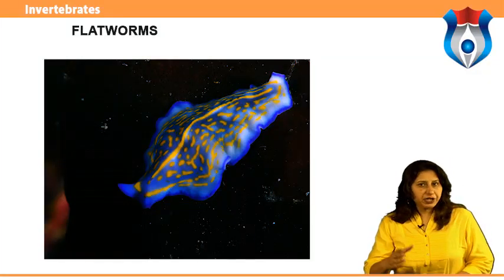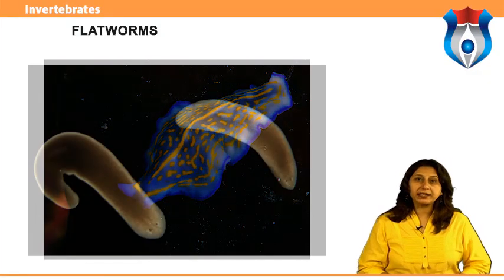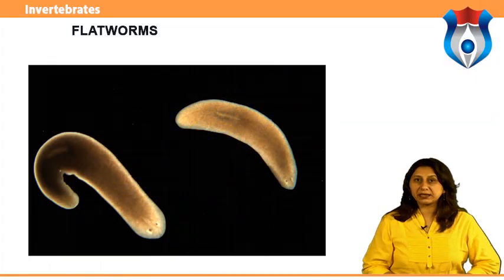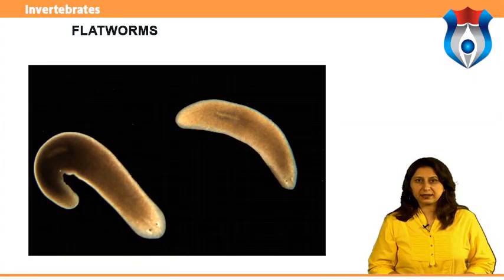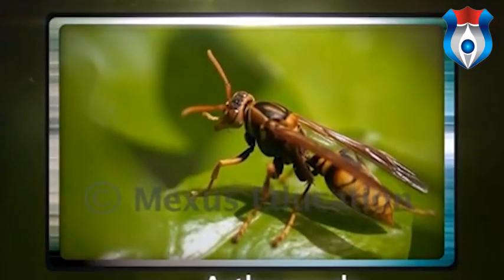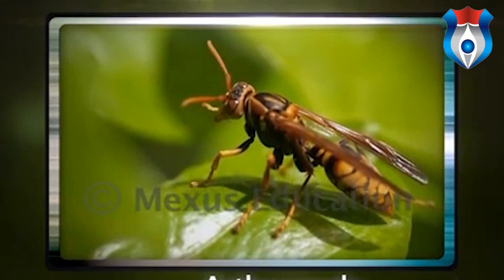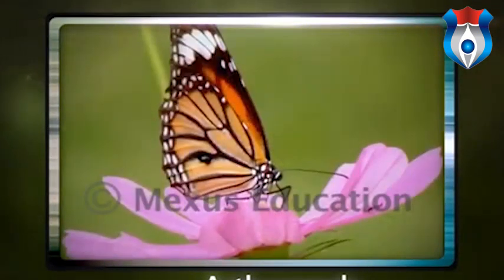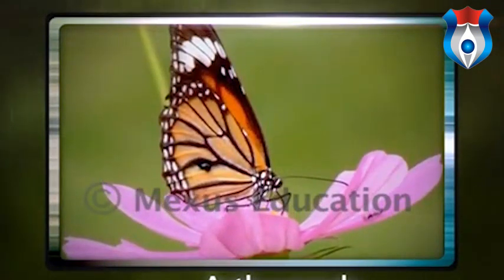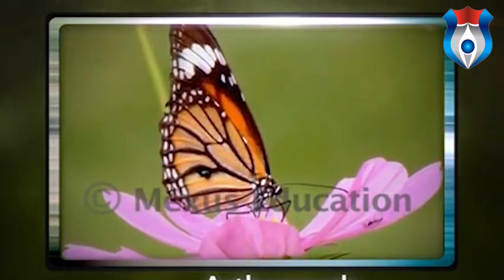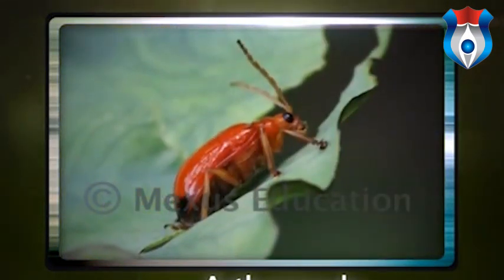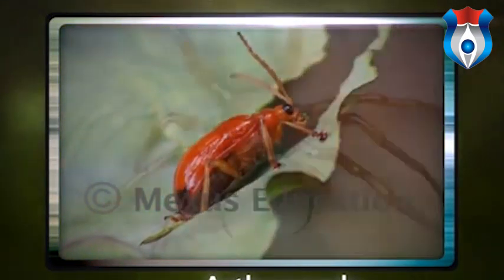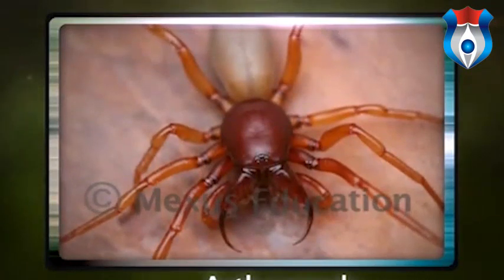We will now learn about phylum Platyhelminthes, commonly called flatworms. Of all living phyla, Arthropoda is the largest, with more than 900,000 known species. This is the oldest and most biologically successful group.